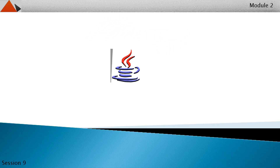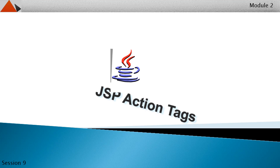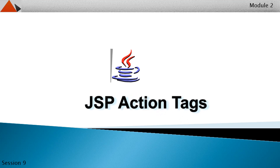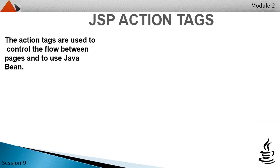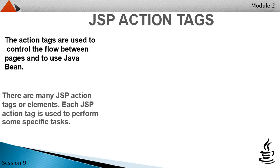Hi there. Welcome back to our next session on Advanced Java. In this session, we will discuss the action tags in JSP. The action tags are used to control the flow between pages and to use Java Bean. There are many JSP action tags or elements, and each JSP action tag is used to perform some specific tasks.